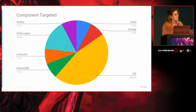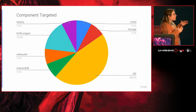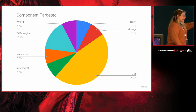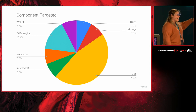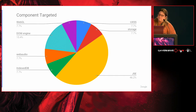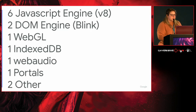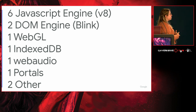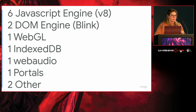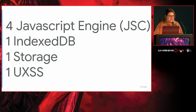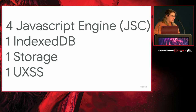One of the ways I'll feel like we've made a big step — that zero day is harder — is when these graphs of components being targeted change. Chrome followed a lot of the common targets we've seen, pretty much the same across the board. WebKit was similar: four JavaScriptCore, one IndexedDB, one storage, and one universal cross-site scripting.